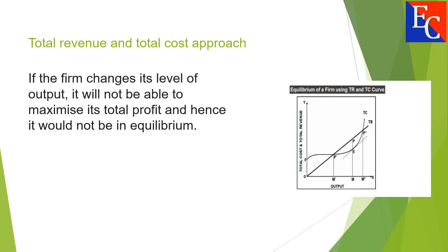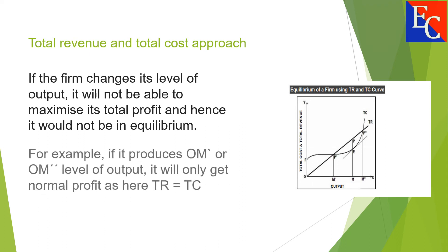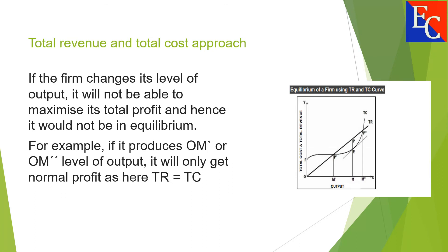If the firm changes its level of output, it will not be able to maximize its profit and hence it would not be in equilibrium. For example, if it produces OM- level of output, it will only get normal profit, as here total revenue is equal to total cost.